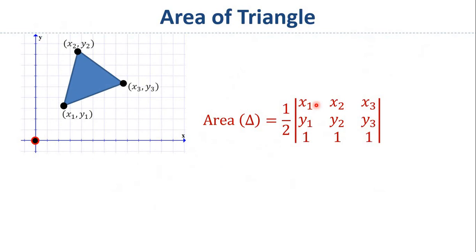So now let's talk about this determinant. The matrix has three column vectors. The first one is x1, y1, 1; the second is x2, y2, 1; and the third is x3, y3, 1. All three column vectors have a vertical component of 1.